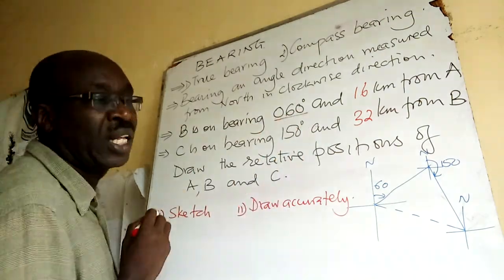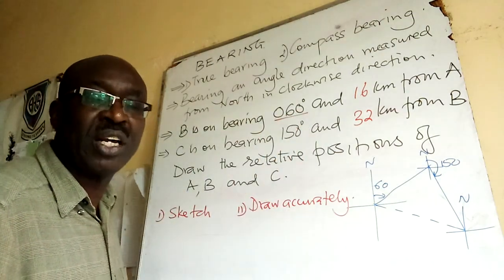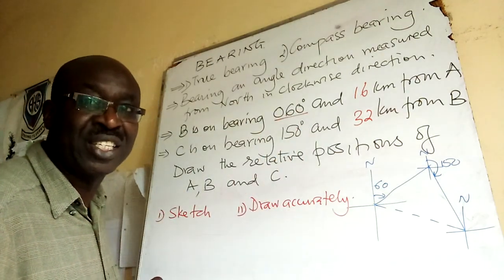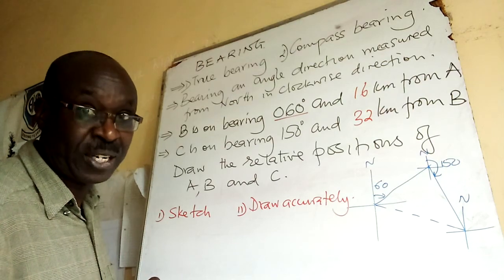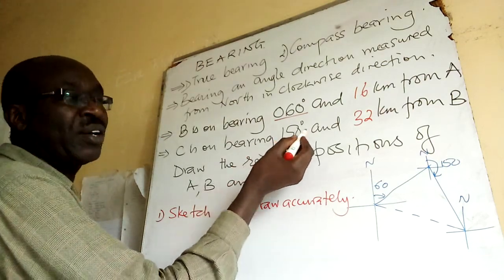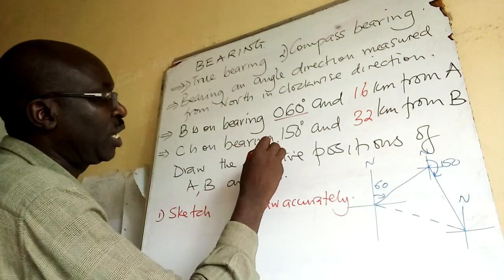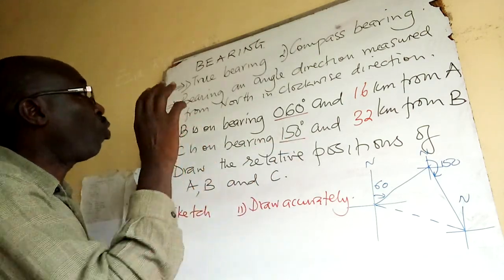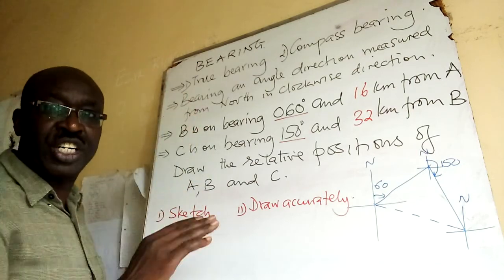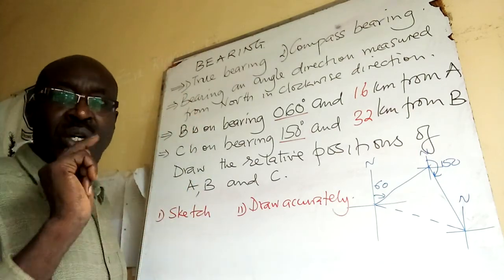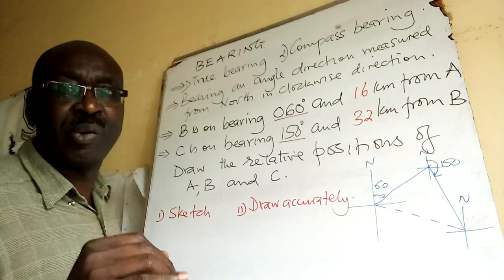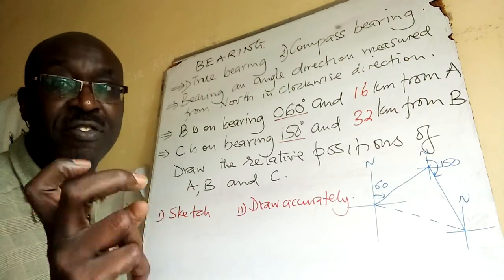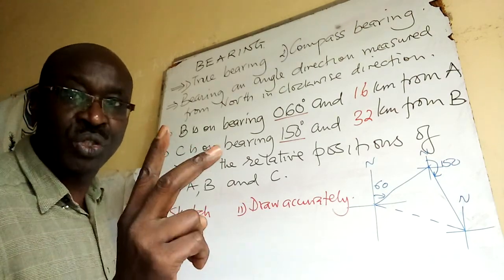We tend to represent true bearing in three figure system. So I've given you an example here. These are three figure system. Instead of just writing 60 degrees, we write 060. 150 already is in three figure. So what I'm doing, I'm concentrating on true bearing. One, it is represented in three figure format.